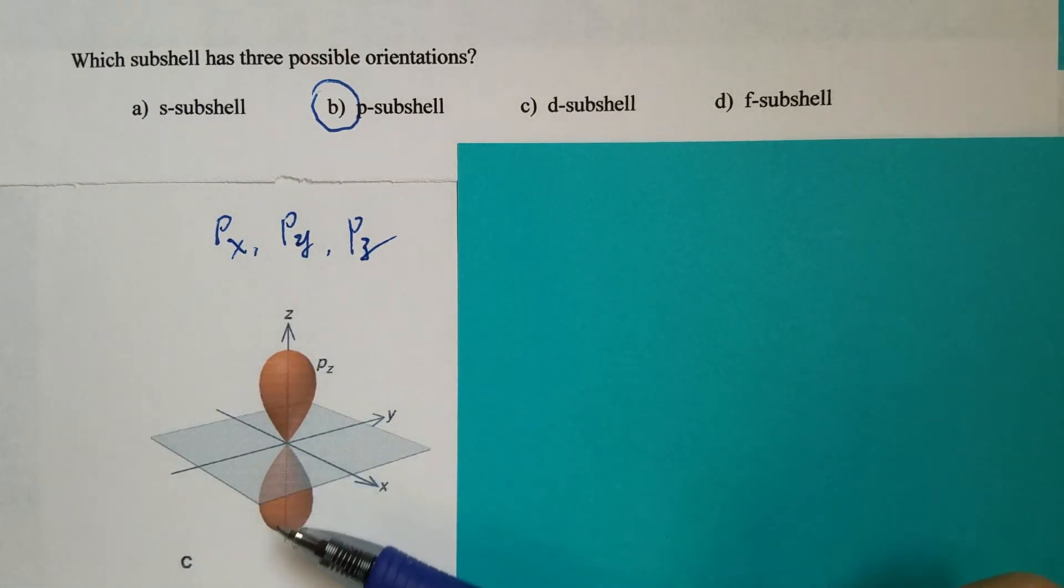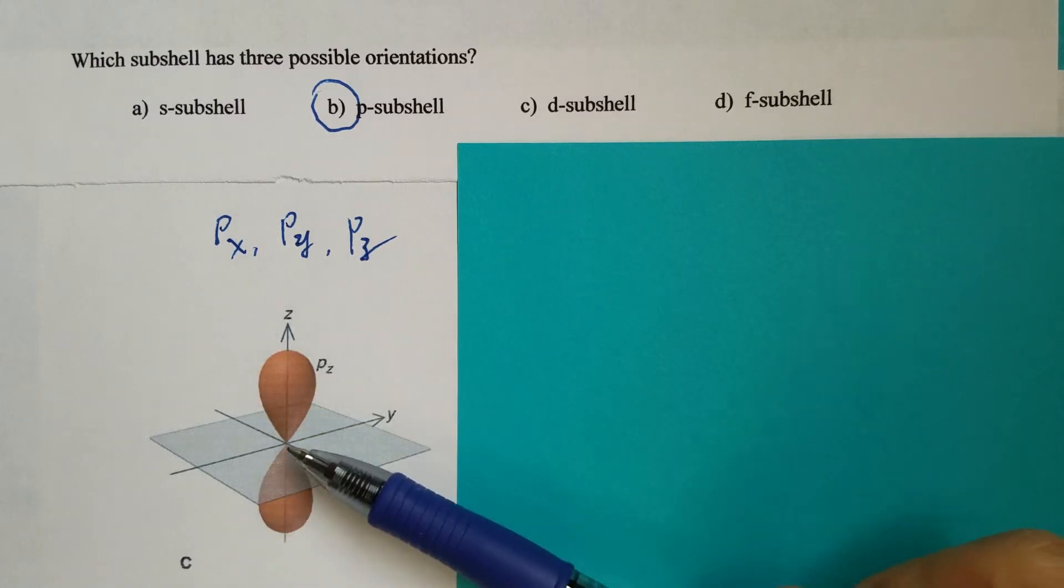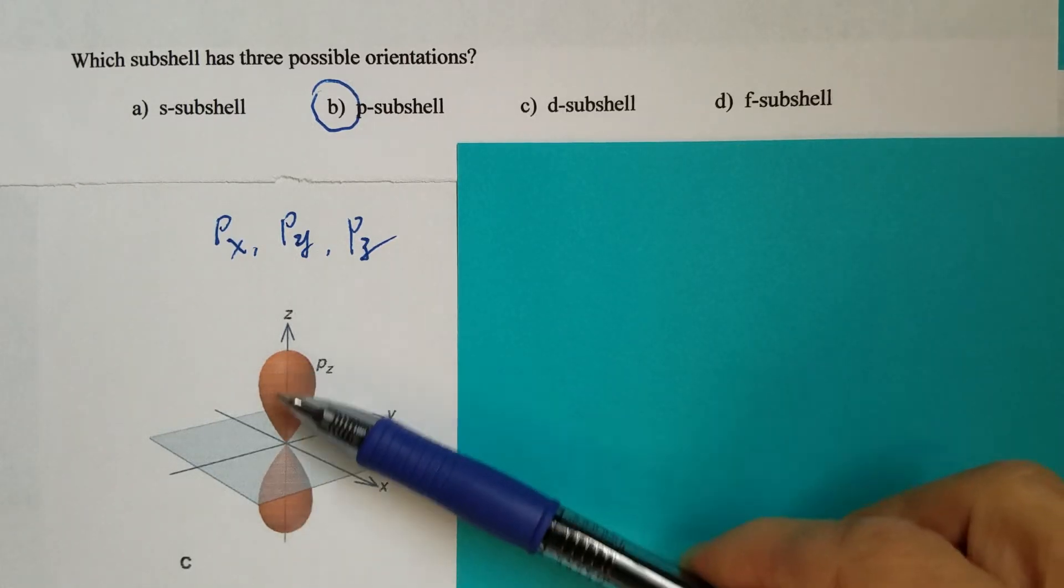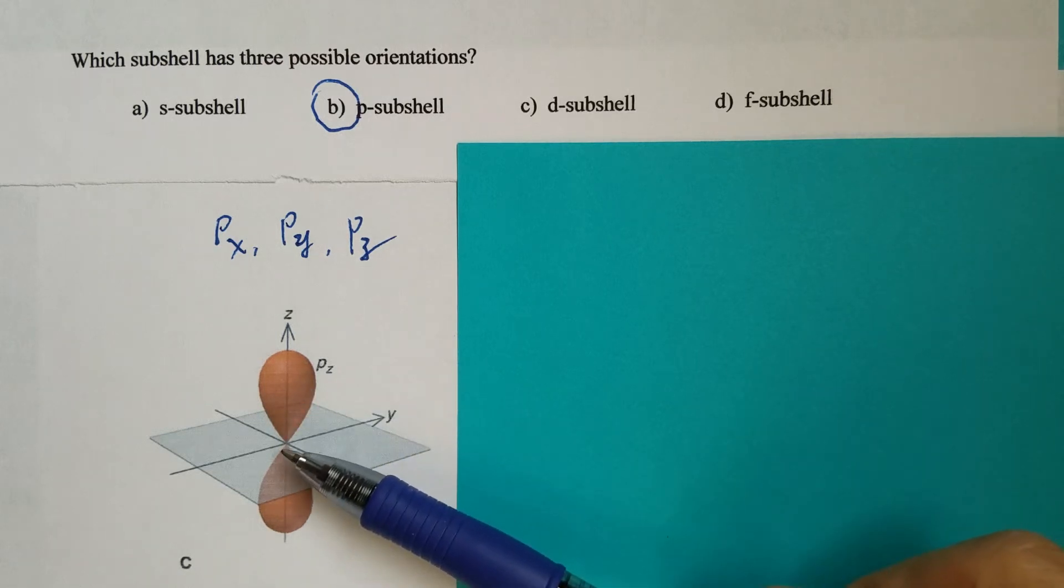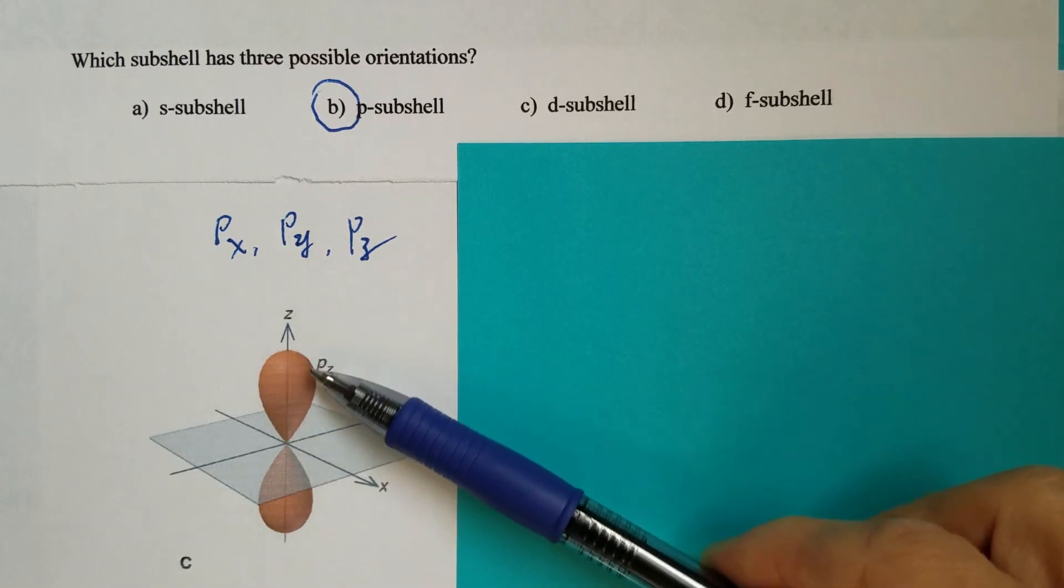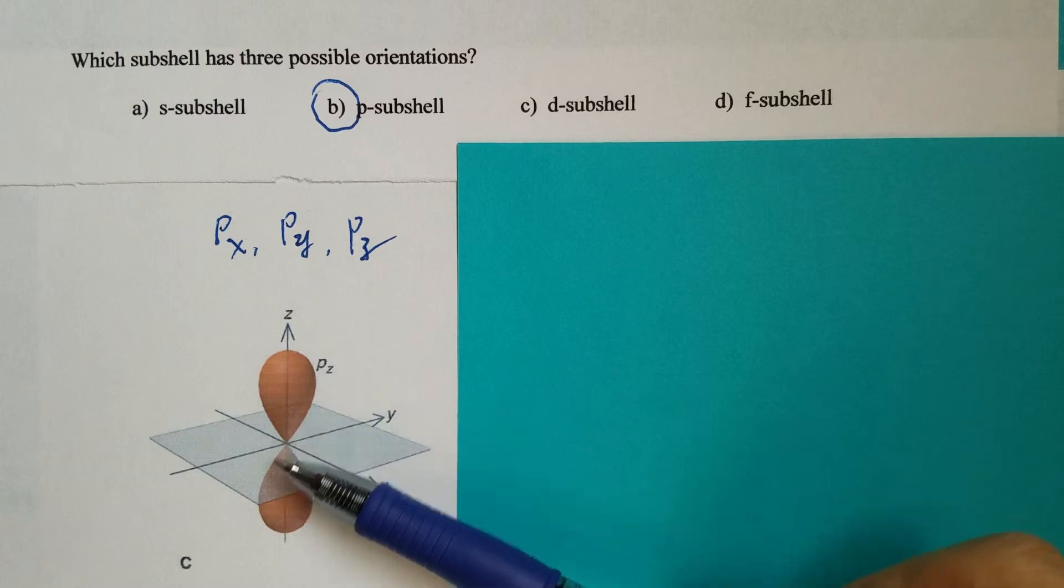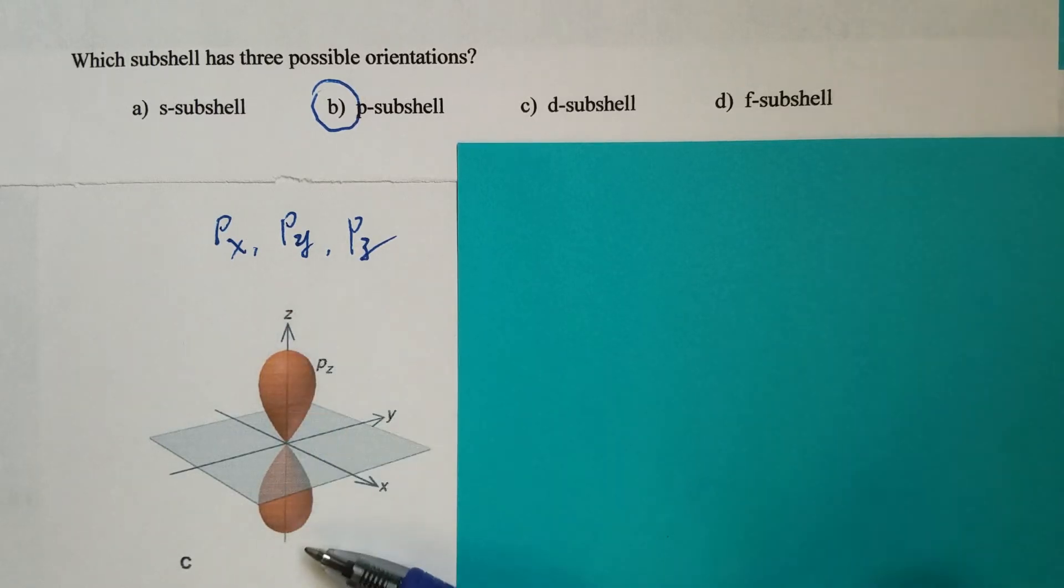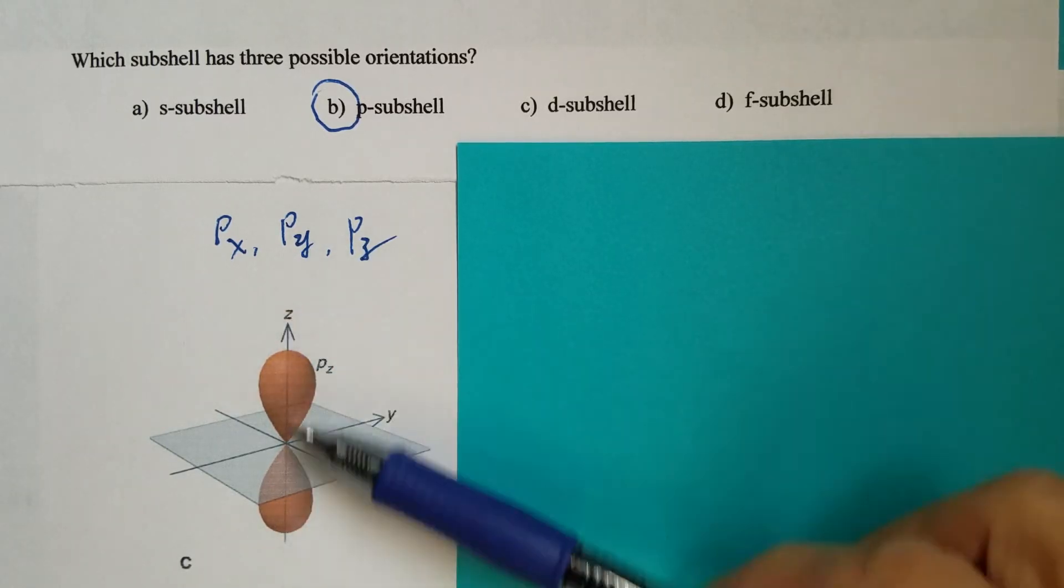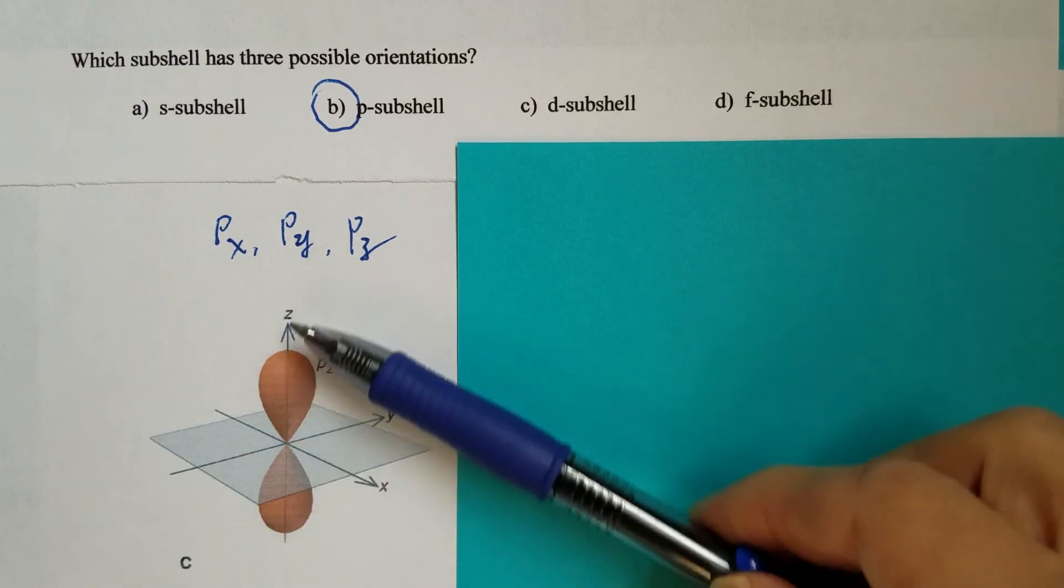So please recall the shape of p orbitals. It's two lobes, like a dumbbell. So the Pz orbital, that should be the one where the two lobes are aligned with the z direction.